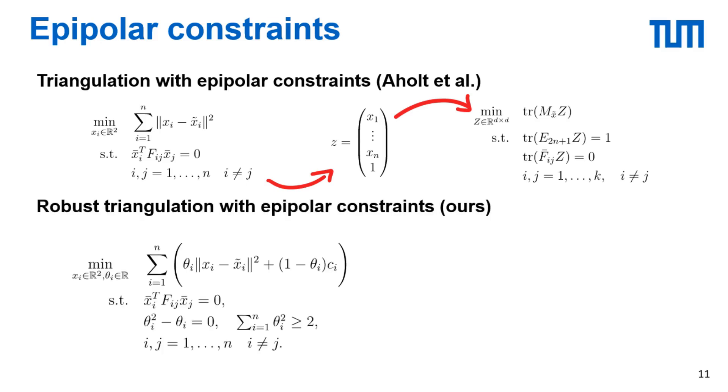For the robust case we start by adding the binary inlier parameters but this is not yet on QCQP form since the first term in the cost function contains a third order term which is mixed in theta_i and x_i. To get around this issue we can use the fact that theta_i equals theta_i squared to move it into the L2 norm. We can also multiply the epipolar constraints by theta_i theta_j since the constraints don't actually have to be satisfied for outliers.